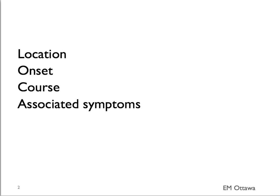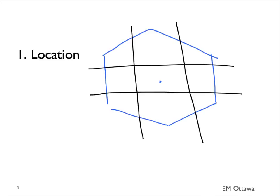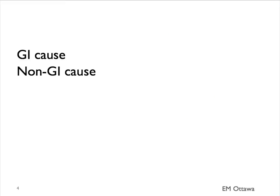Let's see how we can approach each of these four elements. First, location. We can divide up the abdomen into mainly nine different areas, with the umbilicus right in the middle. We now have the right upper and left upper quadrant, the epigastrium, the umbilicus, and right and left flank — both of which also include the posterior part — right lower quadrant, left lower quadrant, and the hypogastric area. For each location, we want to discuss the GI causes and the non-GI causes.